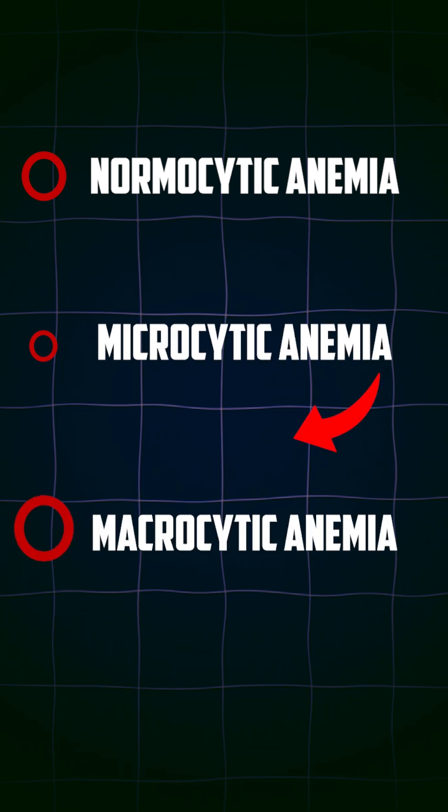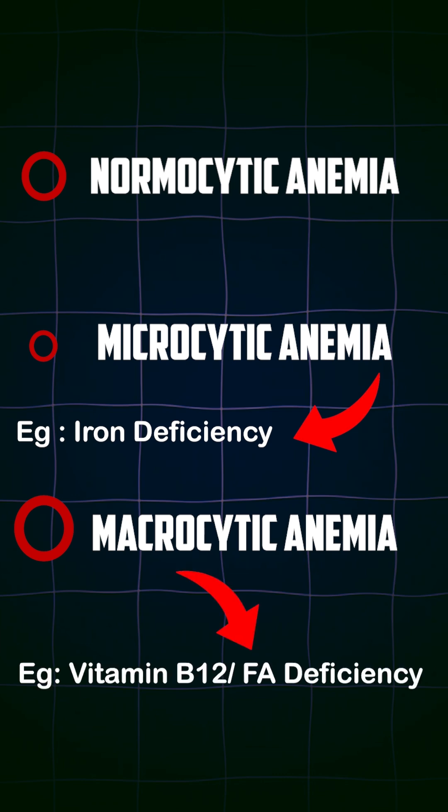For example, iron deficiency will cause the RBC to be smaller in size, which is the microcytic type. Whereas vitamin B12 and folic acid deficiency will cause the RBC to be bigger in size, that is the macrocytic type of anemia. So this gives us an overview on how to identify the cause of anemia.